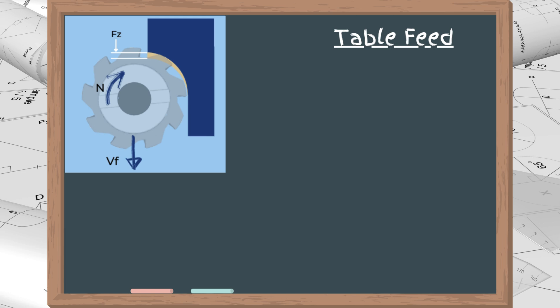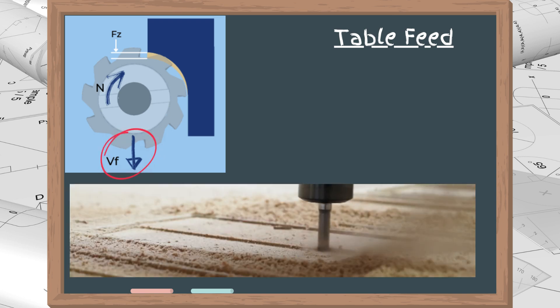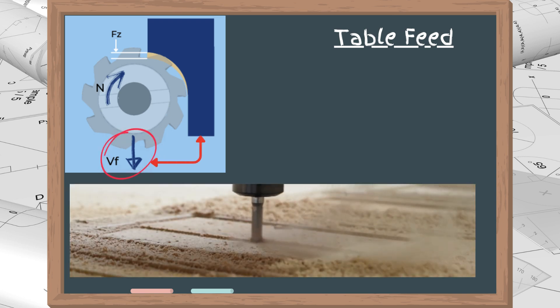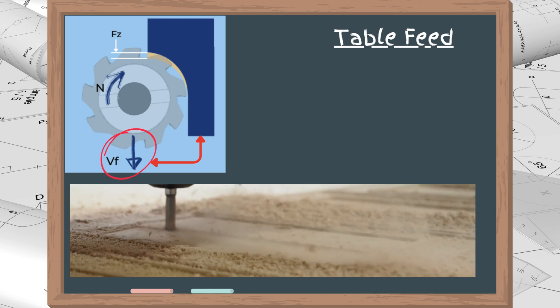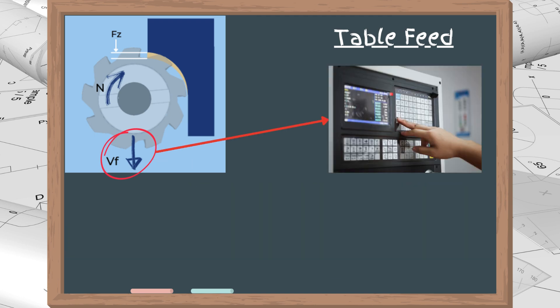The last formula we will explore is for the table feed, sometimes called milling feed rate or feed speed. It is the linear velocity of a milling cutter relative to the workpiece, measured in millimeters or inches per minute.